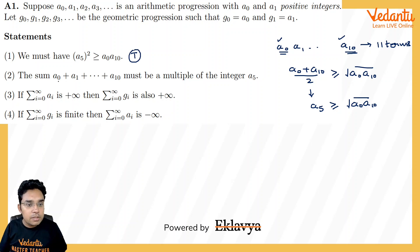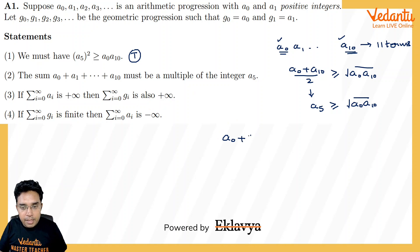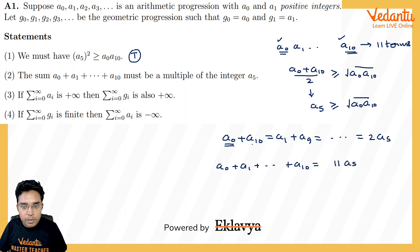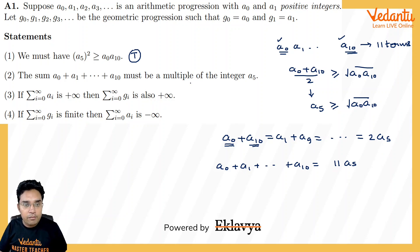Coming to the second part: the sum is a multiple of integer A5. As stated, A0 + A10 equals A1 + A9 and so on, and this equals 2·A5. So the entire sum A0 + A1 + ... + A10 equals 11 times A5. You can replace A0 + A10 by 2·A5 and so on. So it is an integer multiple of A5. This is definitely true.